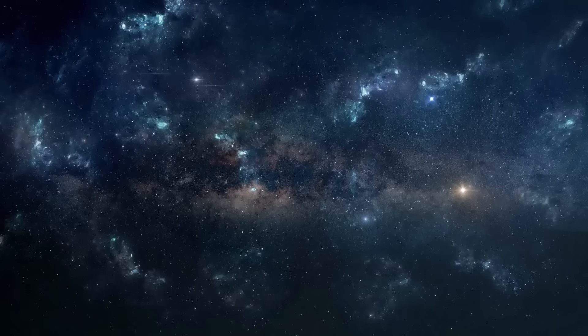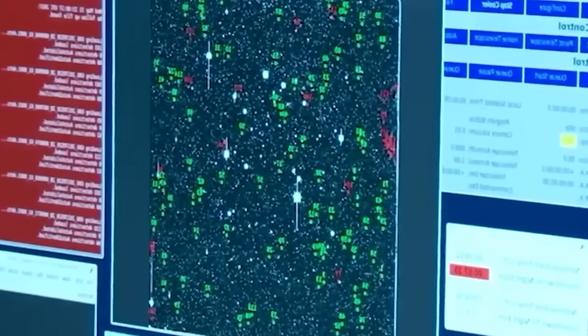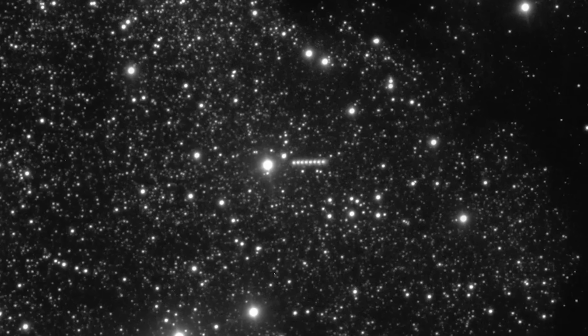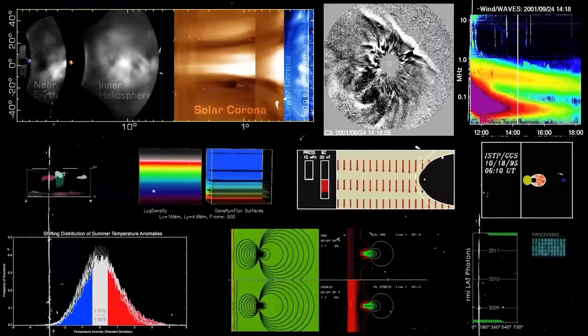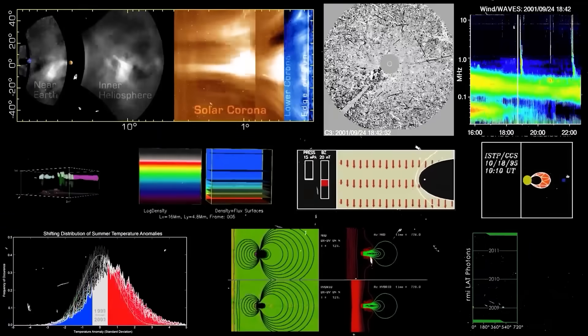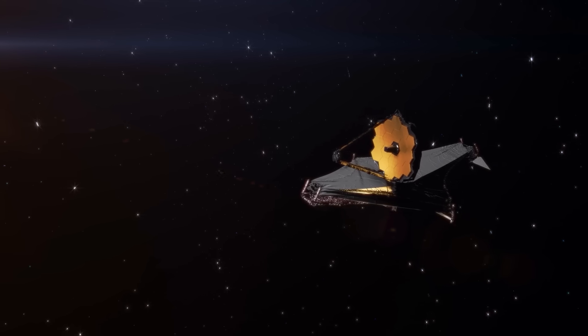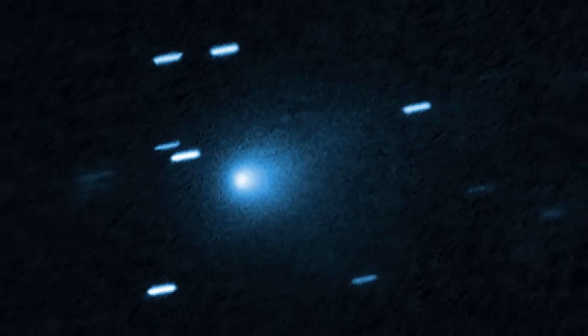The alert went out across every major observatory. Turn your eyes to the ecliptic plane. An interstellar object 3i Atlas was defying all expectations. Initial tracking data showed it was speeding up, but not in a way that made any sense. It was a ghost in the machine of our solar system. So the James Webb Space Telescope was given a single urgent task. Find out what this thing is.